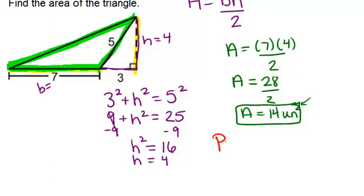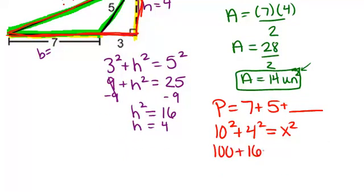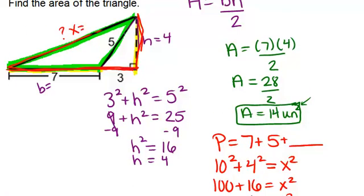So far we know the perimeter is going to be 7 plus 5 plus something else, this mystery side over here. In order to solve for this side, we can actually think about this big right triangle and use the Pythagorean theorem. For this big right triangle, the two sides are 10, which is this full length, 7 plus 3, and 4. And we're solving for the hypotenuse. So we know that 10 squared plus 4 squared equals, let's call this x, x squared. Keep solving, we get 100 plus 16 equals x squared. So 116 equals x squared, which means that x is approximately 10.77. So that means our missing side right here was about 10.77 with the help of the Pythagorean theorem.